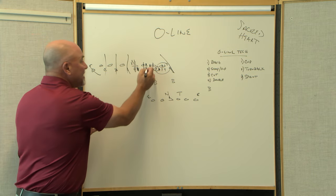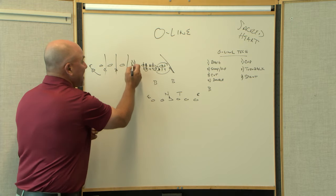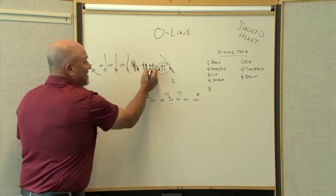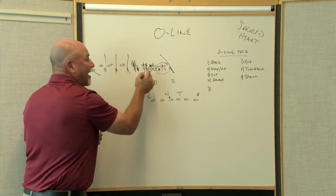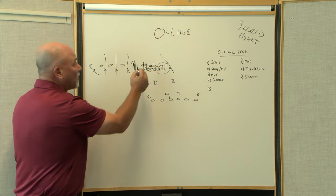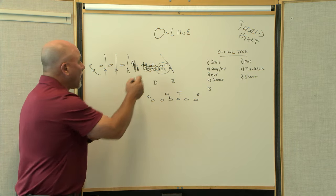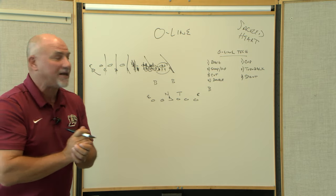If I say a guy's in a three, he's shaded on the guard. If I say he's head up on the nose, he's in a zero. If he's on the inside eye of the tackle, which is one of the toughest things for the tackle because he needs help from the guard right there, eye four is a great situation to be in.